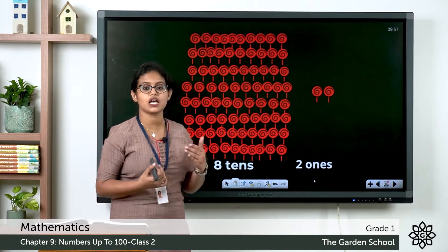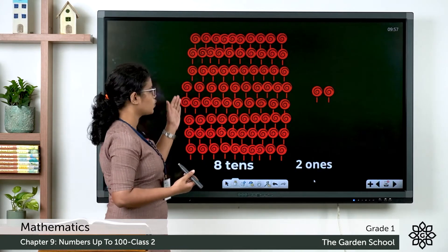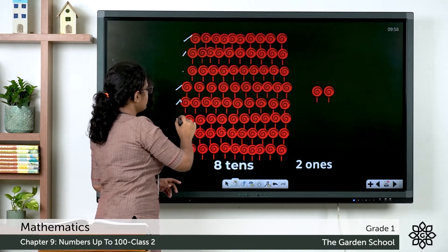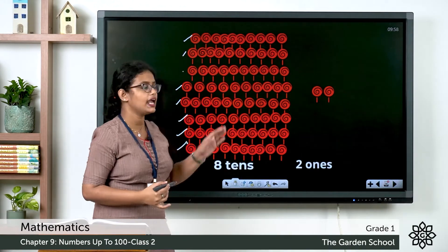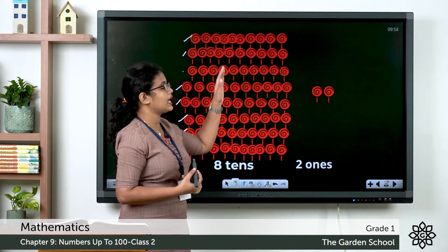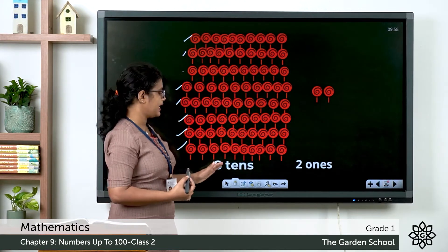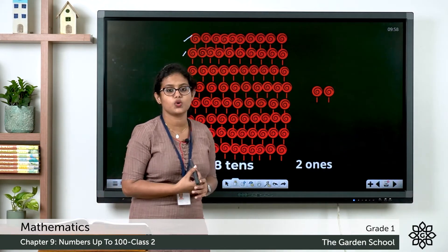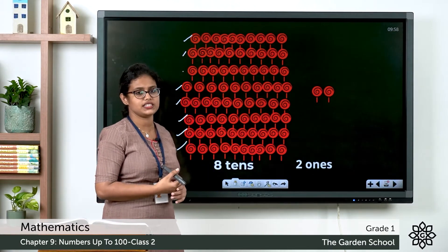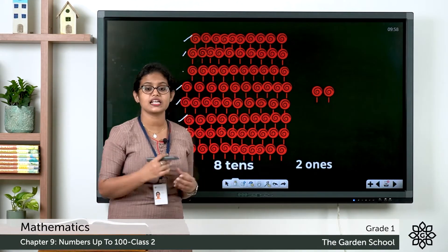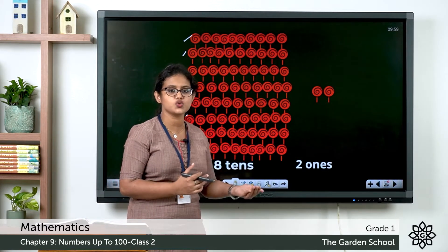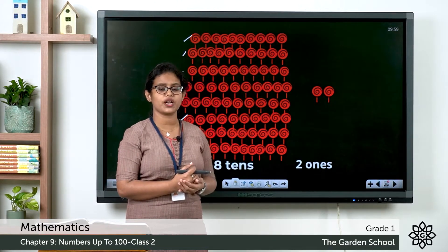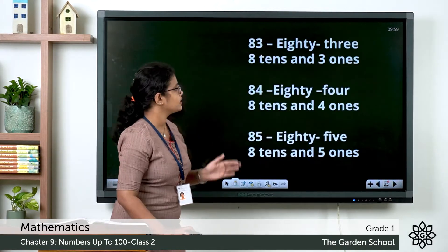Then the next number comes after 81. Again you can see groups of lollipops — 8 groups of 10 lollipops each. That is 8 tens, which makes 80. And you have 2 single lollipops, that is 2 ones. So 80 plus 2 equals 82. So what is the next number after 81? It is 82.